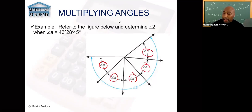In order to find that, and since they're all equal for angle A, which is 43 degrees, 28 minutes and 45 seconds, and they're all the same angle and there's five of them, in order to find all of them, we're going to call it angle two. We need to multiply that number, that angle A, by five. So let's show you how we're going to do that.